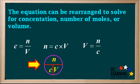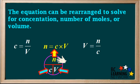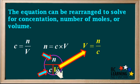A handy mnemonic for obtaining all three equations is to write n over CV like this. To find the equation for C, just put your hand over the C, and you are left with n over V, so the equation is C equals n over V. To solve for n, put your hand on the n, and you are left with C times V, so n equals C times V. And to solve for V, put your hand on the V, and you are left with n over C, so V equals n over C.